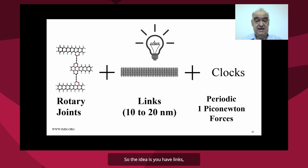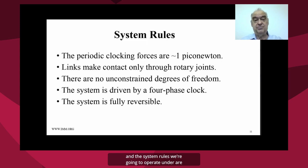So the idea is you have links which are mechanical objects that transport the forces, and rotary joints which allow those transported forces to interact with each other. And we have clocks which drive the links. And the system rules we're going to operate under are that there are periodic clocking forces which are about a piconewton, very small forces. And the links make contact only through the rotary joints. So there are no other contacts between the links to confuse the issues or make the design more difficult. There are no unconstrained degrees of freedom. All of the degrees of freedom are constrained and controlled. The system is driven by a four-phase clock and the system is fully reversible.